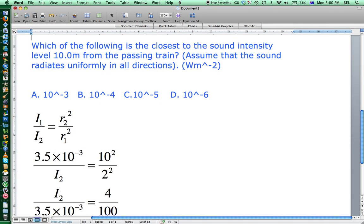So we already know intensity 1 and radius 1 from the previous question. Intensity 1 is 3.5×10^-3 watts per meter squared, and the radius was 2, so it's 2 squared on the bottom line there.